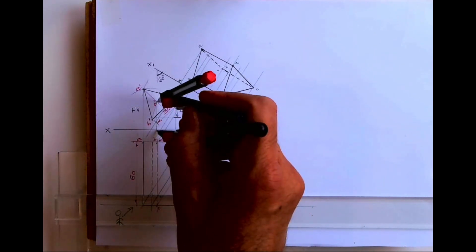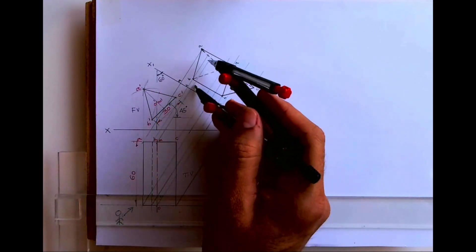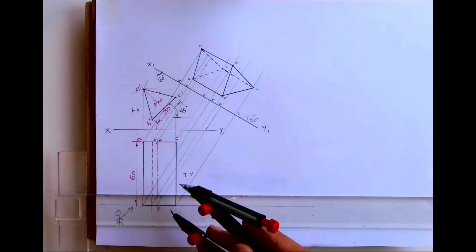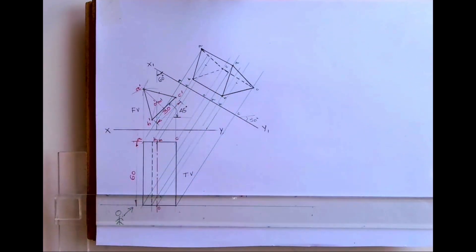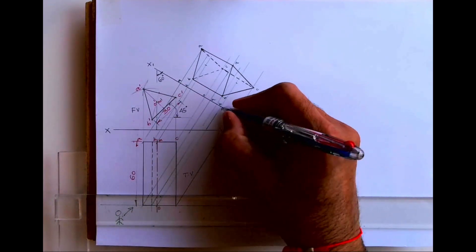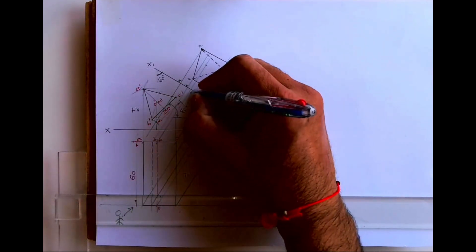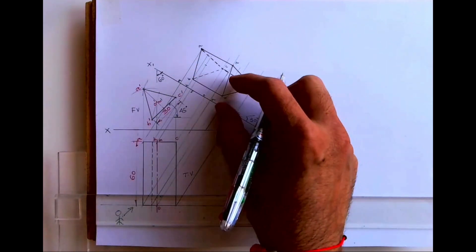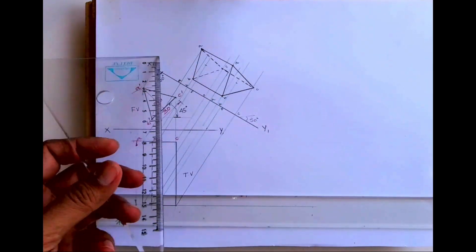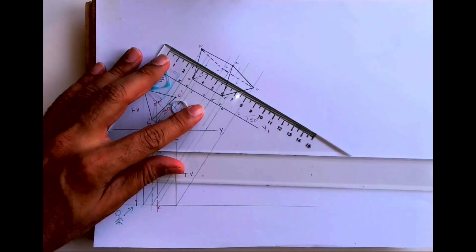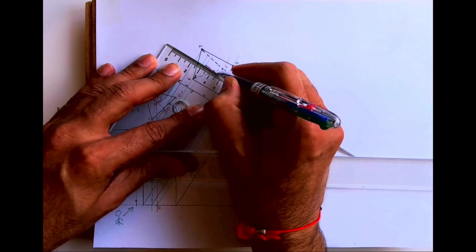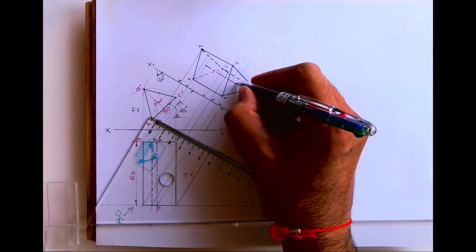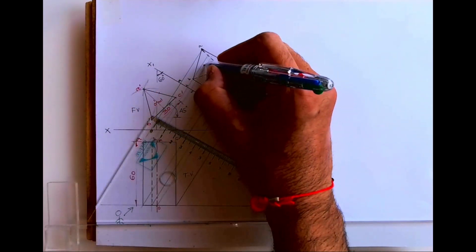Now take this distance, XY to OM, and you cut it from here, from M and from O. See, this is O, this is M, so you cut that much distance. So you will get axis lines.